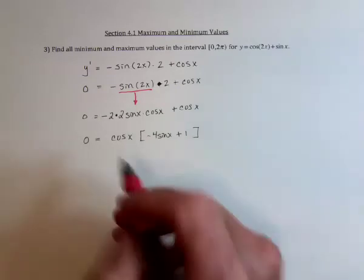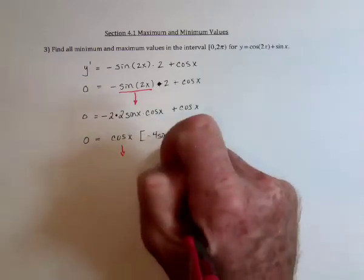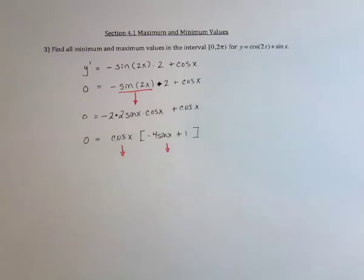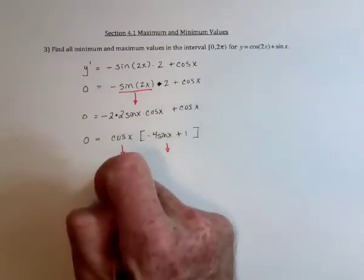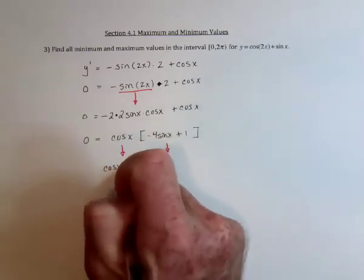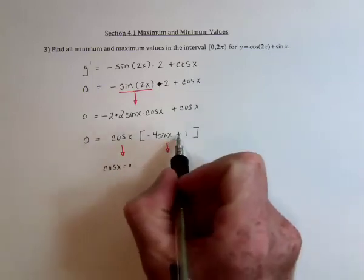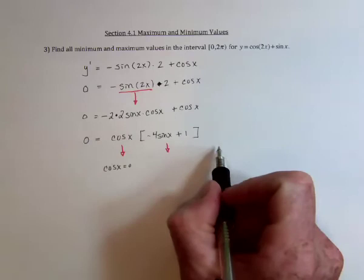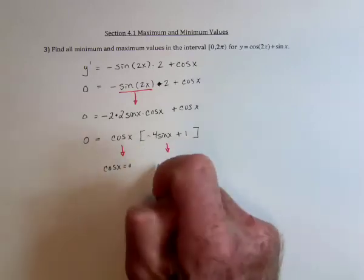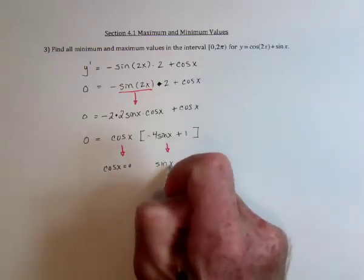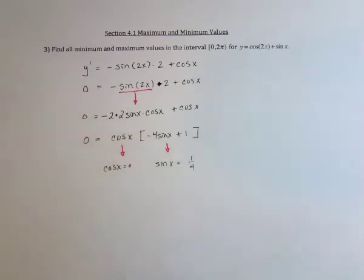Now that it's factored, set each factor equal to 0. So this one would say, when does cosine equal 0? And set this one equal to 0. We can move the 1 to the other side, it would become negative, and divide by 4. So this one says, when does sine of x equal a positive 1 fourth?